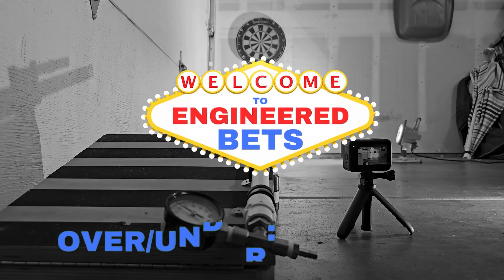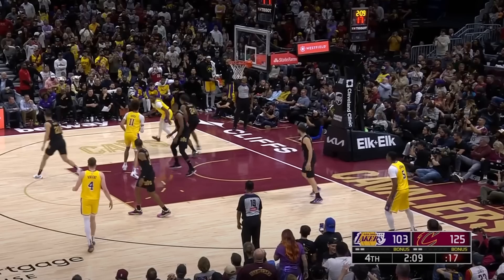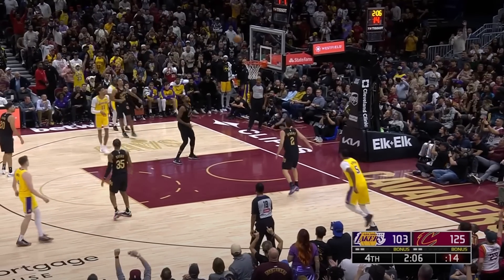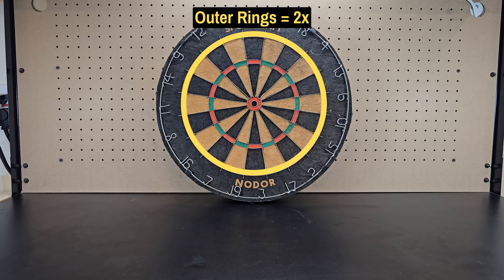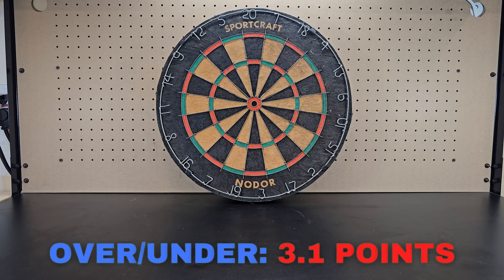Welcome back to Engineered Bets. Today's line is over under 3.1 points, which is slightly more than Bronny's career high in the NBA. As a reminder, these intersections count as triple and these outer ones are double, so keep that in mind when making your prediction.